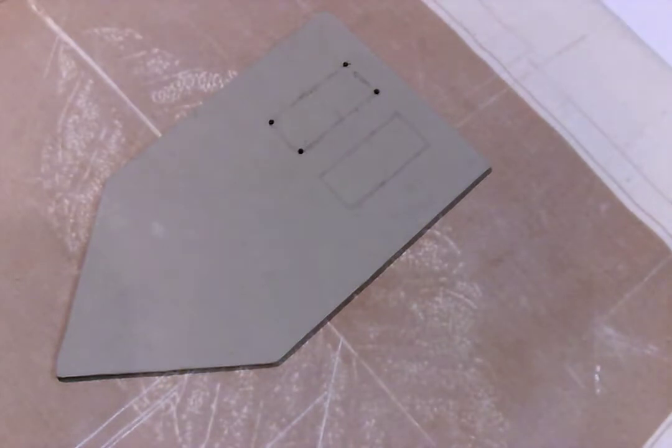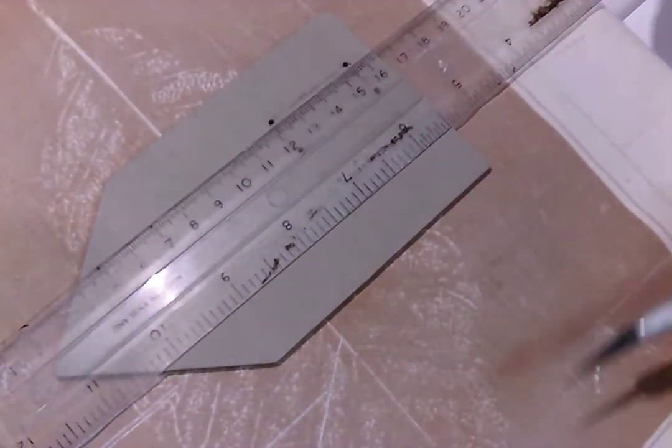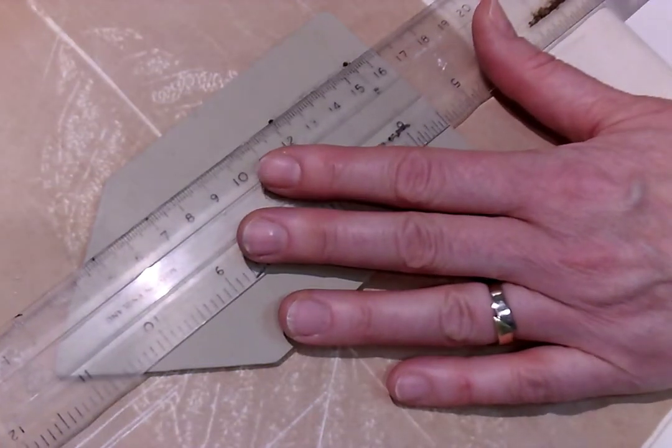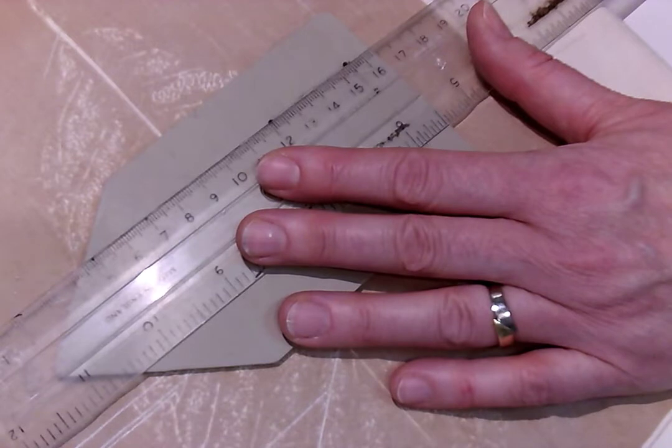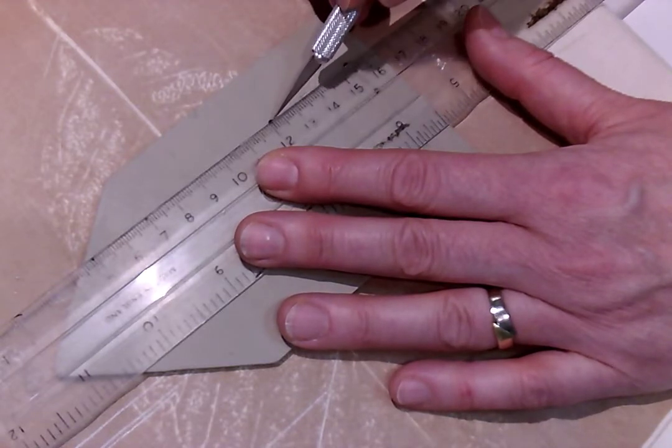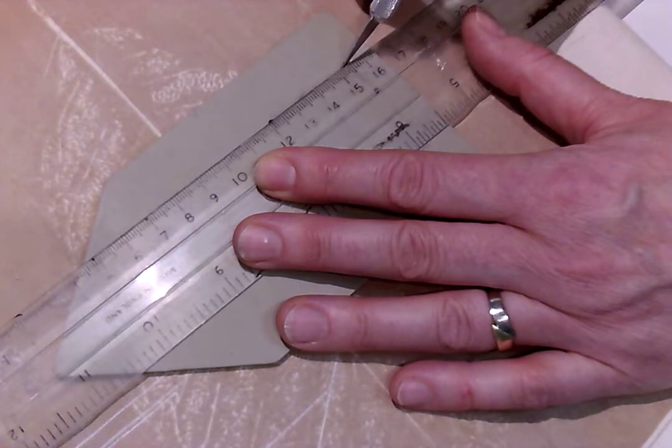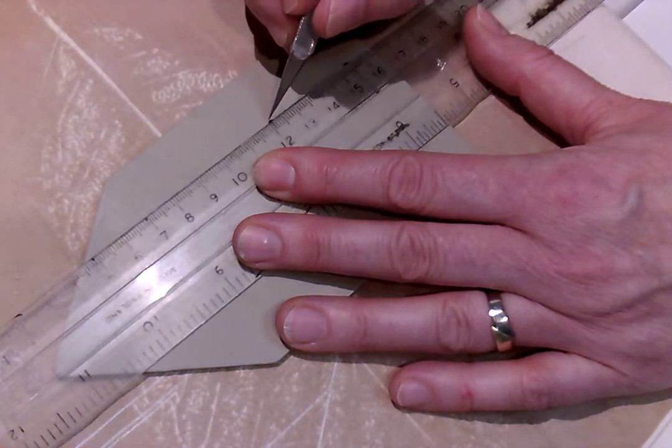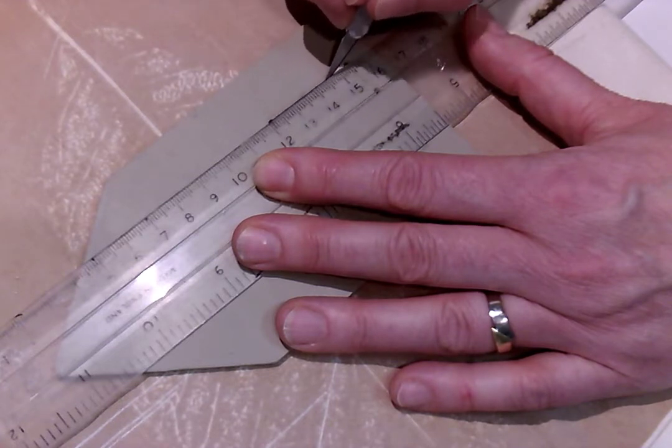Next cut from the edge of one circle to the edge of the other. When you're cutting it works best if you're able to score a little bit at a time. So score the line, not all the way through, then score in the same place again and then score again.